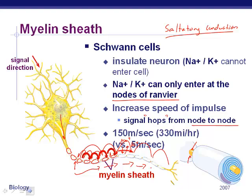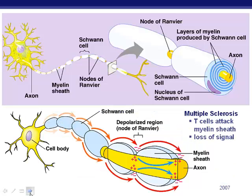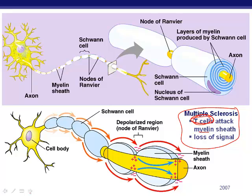Saltatory conduction changes the speed to about 150 meters per second — much faster compared to just 5 meters per second in an unmyelinated axon. Some disorders affect this conduction speed. Multiple sclerosis, for example, involves T cells in the immune system attacking and stripping the myelin sheaths — so signals slow down and can cause serious nervous system disorders. We'll go into more detail next class, so make sure to write down any questions.